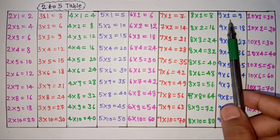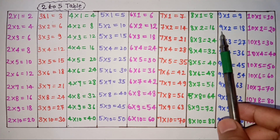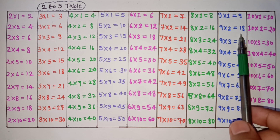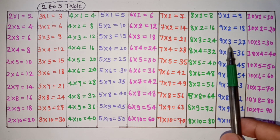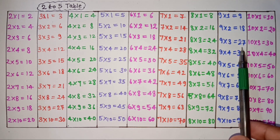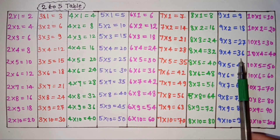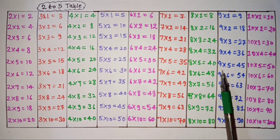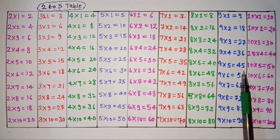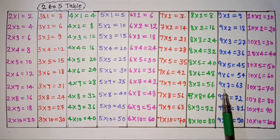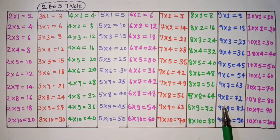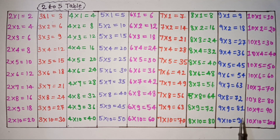Nine ones are 9, nine twos are 18, nine threes are 27, nine fours are 36, nine fives are 45, nine sixes are 54, nine sevens are 63, nine eights are 72, nine nines are 81, nine tens are 90.